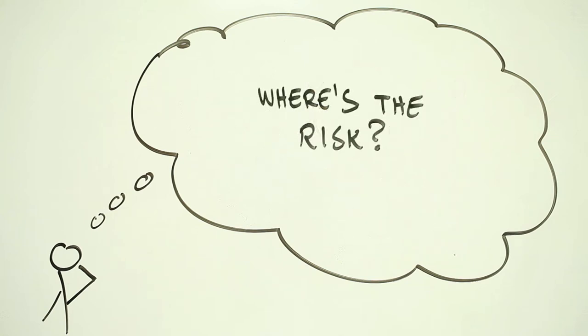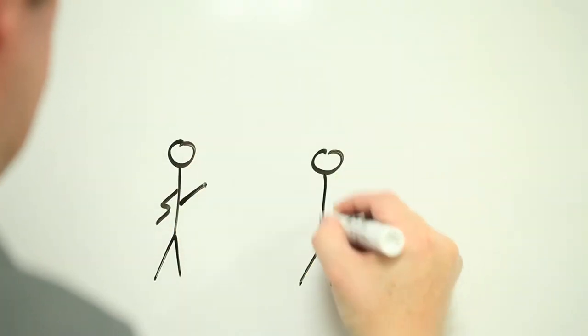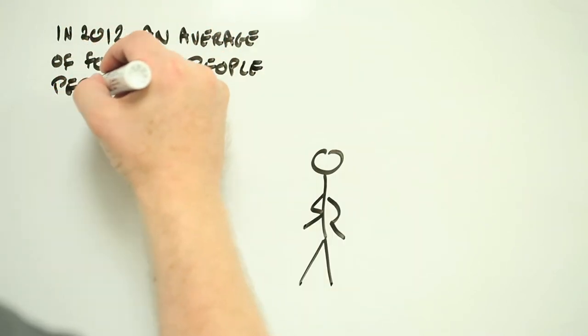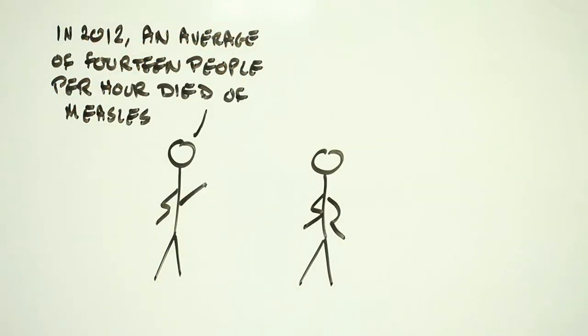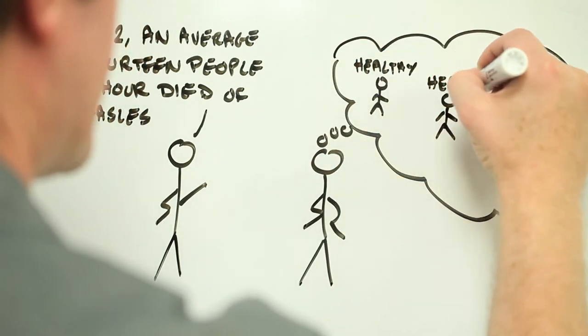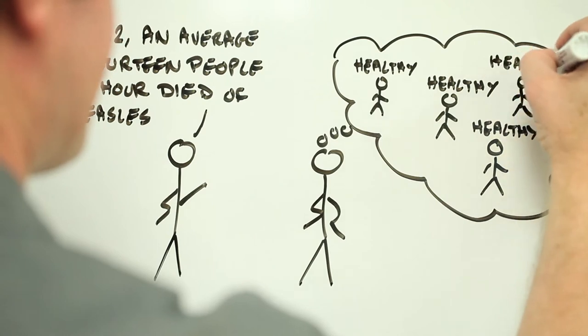This process is what psychologists call the availability heuristic. The strange thing is, the actual numbers, the statistics saying how many people get sick, don't tend to change this feeling. Numbers might change what we think consciously about risk, but more often it's that availability heuristic that shapes our feelings about risk.